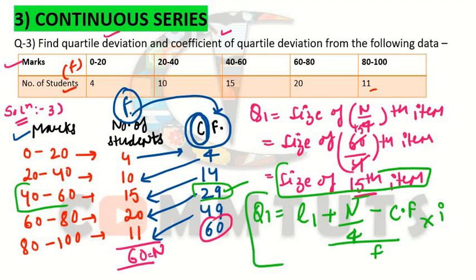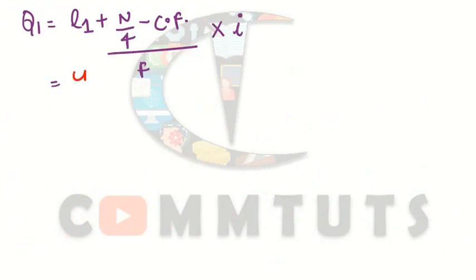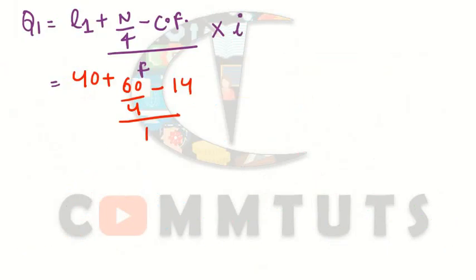Now put all values into the formula. L1 = 40 (lower limit of the class 40–60), N = 60, cumulative frequency (Cf) of the preceding class = 14, frequency (f) = 15, and class interval (i) = 20. So Q1 = 40 + [(60/4 − 14) / 15] × 20.